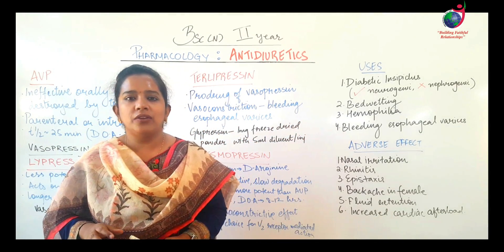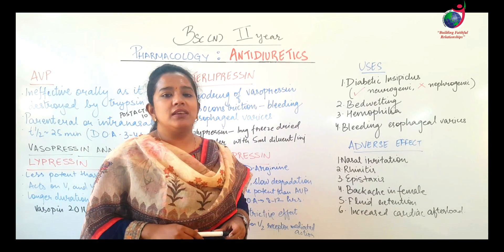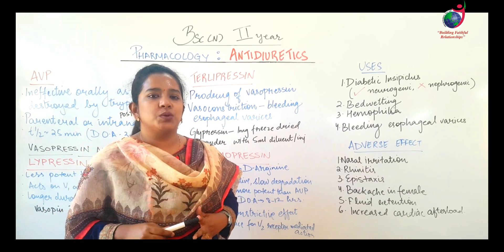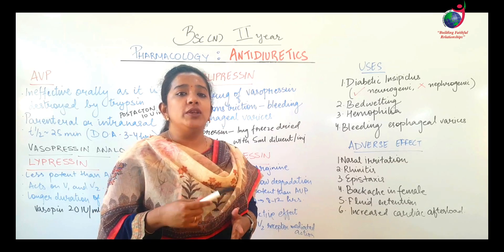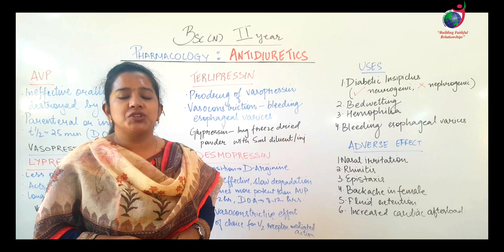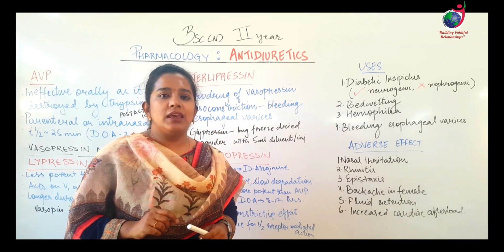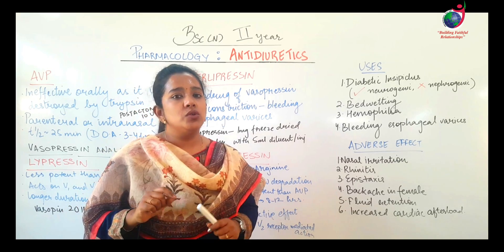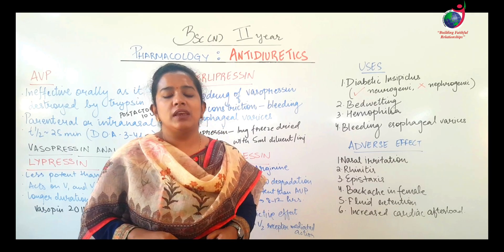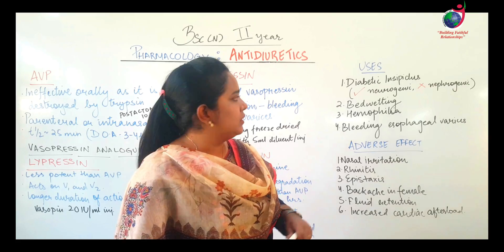Clinical uses of antidiuretic hormones and their analogues: they are very good for diabetes insipidus, a condition where ADH levels become low and polyuria results. Diabetes insipidus is of two types — neurogenic and nephrogenic. These drugs are effective for neurogenic diabetes insipidus, but do not have actions on nephrogenic diabetes insipidus.